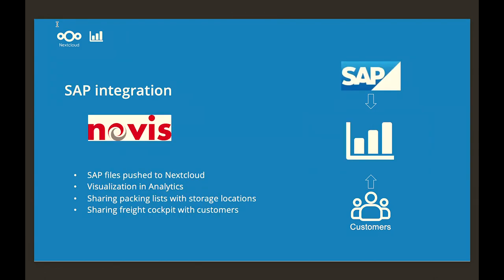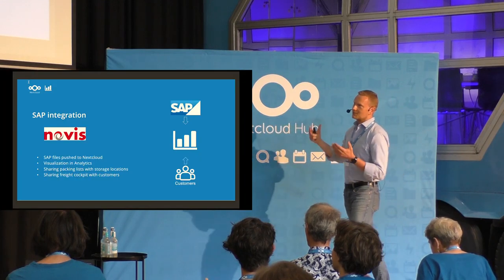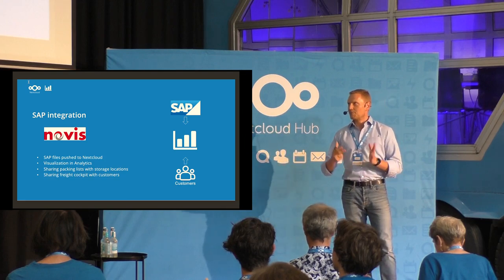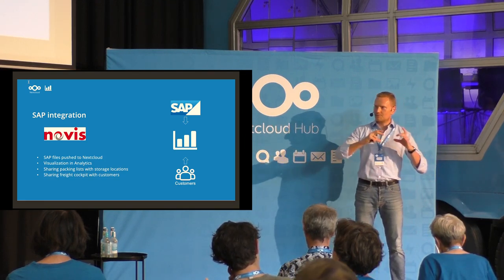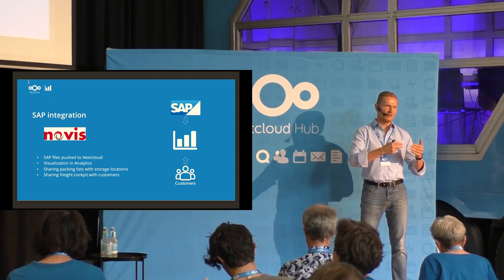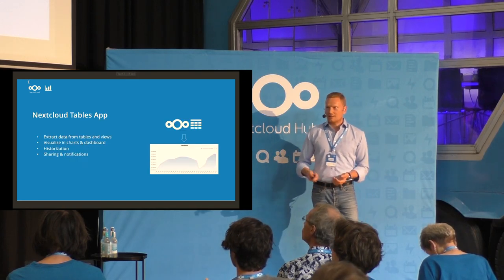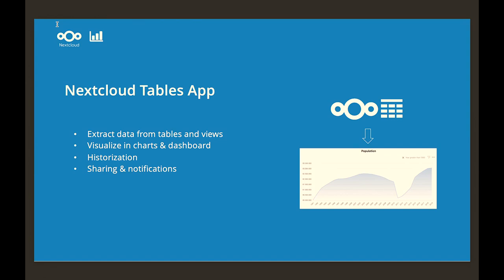Another example is Novice, an engine manufacturer in Germany. As a small company using SAP, logistics data is extracted from SAP and automatically pushed into Nextcloud as CSV files. Analytics picks up these files, visualizes them in tables, and Novice uses the sharing API to share data like packing lists with storage locations and provide a freight cockpit for customers and forwarders — all without needing a SAP user account. Additionally, Nextcloud Analytics integrates with the Tables app to visualize data in charts and dashboards, and supports historization for daily snapshots to create trends over weeks, months, or years.